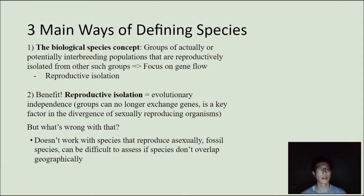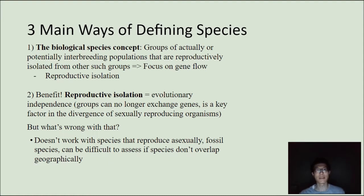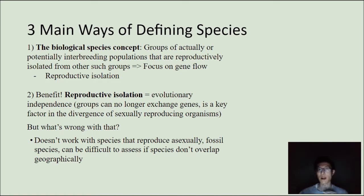The benefit of this particular concept is that it's looking at evolutionary independence — groups can no longer exchange genes between different populations. That's a key factor in divergence. So if you have a gene in one population that can't get into the system of another population, then those two populations can ultimately diverge and become reproductively isolated. So there's a key focus on gene flow and reproductive isolation, with sexually reproductive organisms going through processes that ultimately prevent gene flow from one population to another, resulting in separate species.